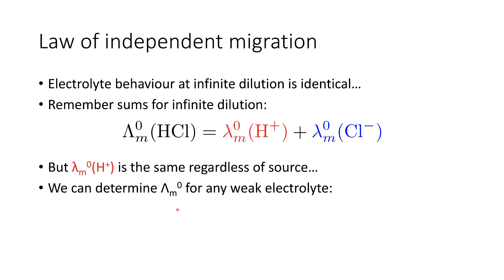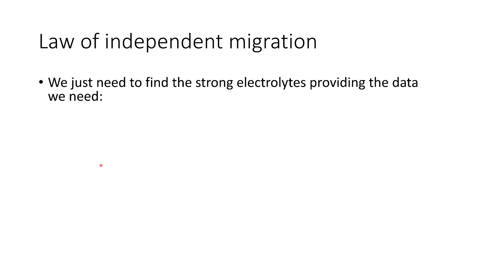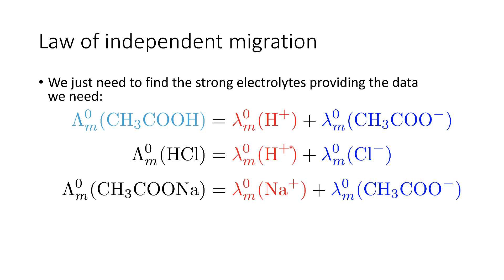We can't measure the limiting conductivity of a weak electrolyte directly because it isn't fully dissociated, so we need to work around this. We use the idea that the limiting molar conductivity for any ion is the same regardless of where it comes from. All we need to do is find strong electrolytes that provide the data we need. We can use the limiting molar conductivity of hydrochloric acid to give us the limiting molar conductivity of the proton, and the limiting molar conductivity of sodium acetate — a strong electrolyte — to give us the limiting molar conductivity of the ethanoate ion.